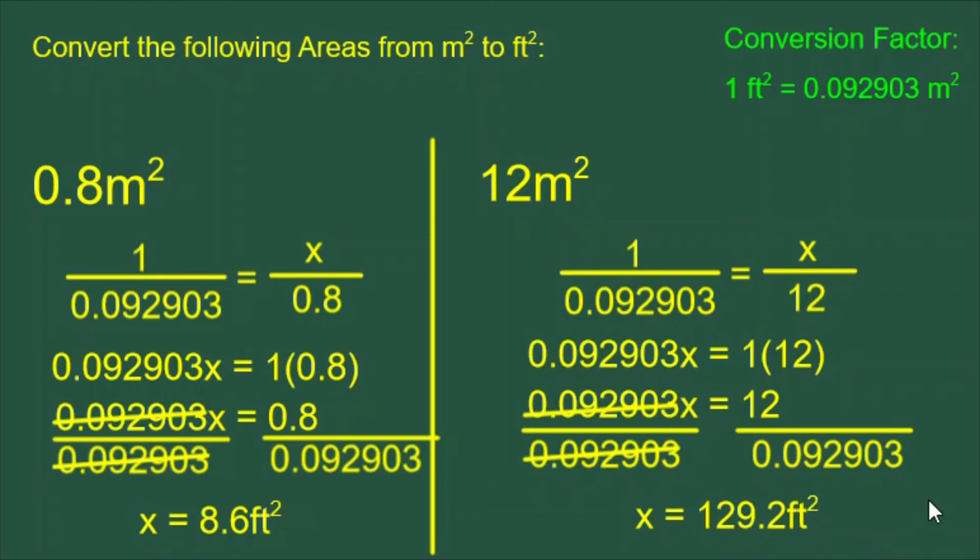In the end, you can see a shortcut happening. When we're doing this, we end up taking the 12 meters squared in the question and dividing it by this number from the conversion factor. That is a shortcut that will work, but building the proportion and cross multiplying shows all of your steps.